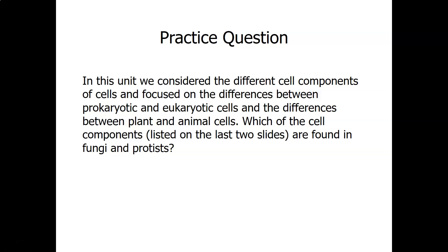Cell walls are found in prokaryotes and plant cells, but not in animal cells. We've just got a few slides left with review questions. In this unit, we considered the different cell components and focused on the differences between prokaryotic and eukaryotic cells, and the differences between plant and animal cells, which are eukaryotic.